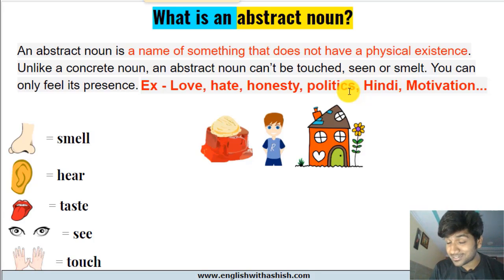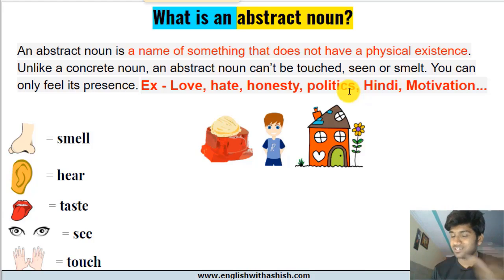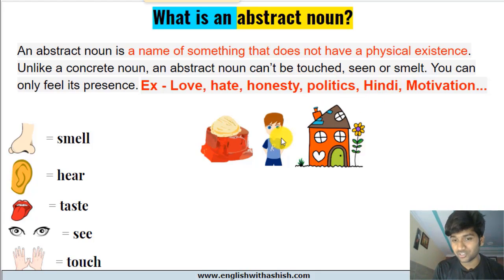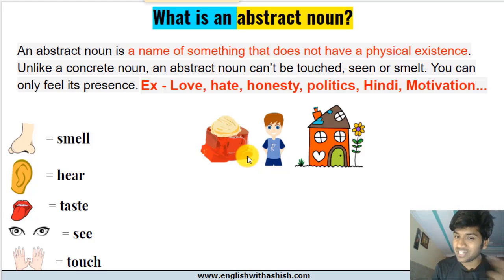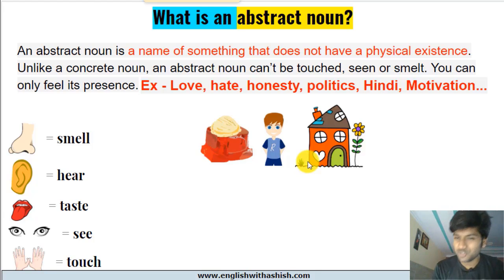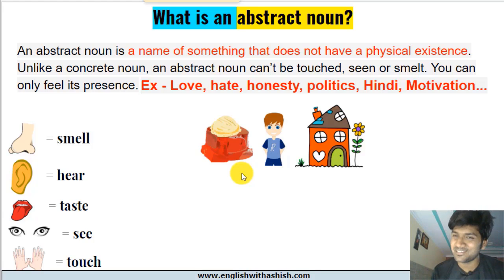Can you see love? Can you hear it? Can you taste it? Can you touch it? Can you smell it? You cannot do all these things to abstract nouns as they do not have a physical form or existence. Unlike these, look at the pictures on the screen — a cake, a boy, a house. These are concrete nouns. Can you touch these objects? Yes. Can you smell them? Yes. Can you see them? Yes. You can do all these things to concrete nouns but not to abstract nouns.